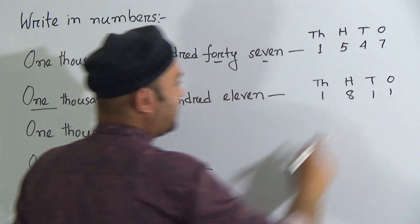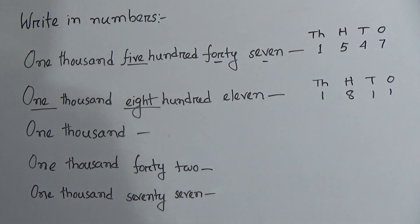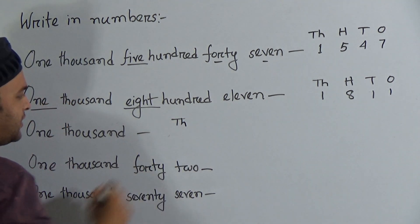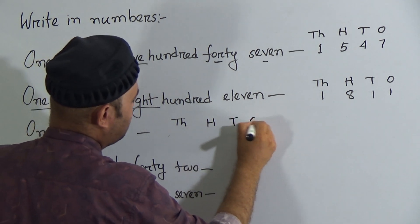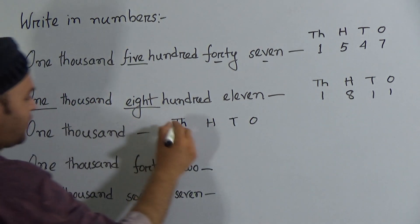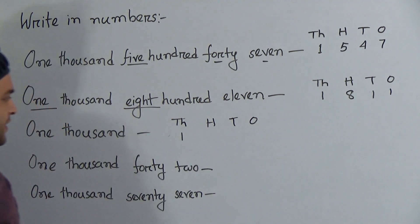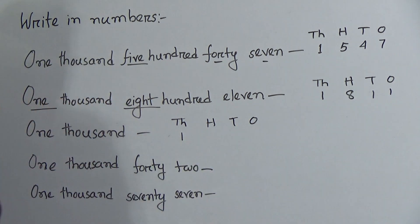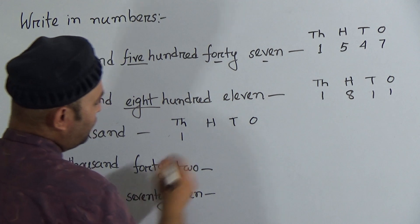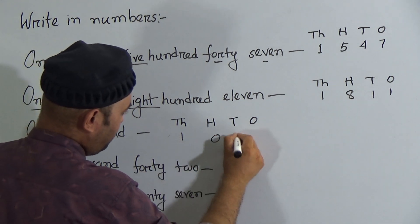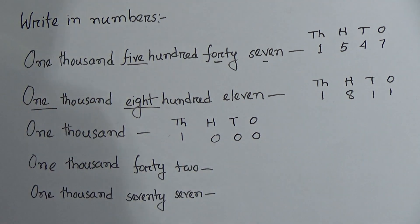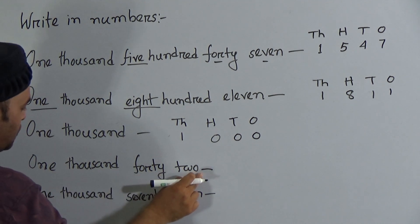So one thousand eight hundred and eleven is complete. Next one is one thousand. First we write thousands, hundreds, tens, and ones place. One thousand — write one in the thousands place. The hundreds, tens, and ones places are blank, so we write zero in each blank place. One followed by triple zero is called one thousand.